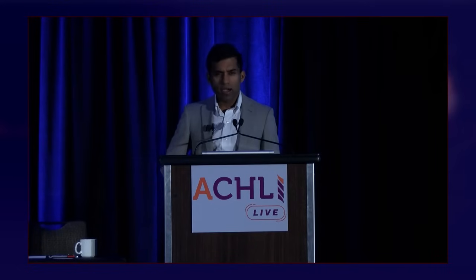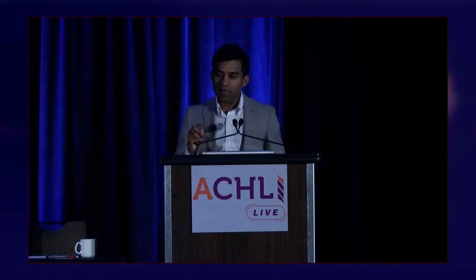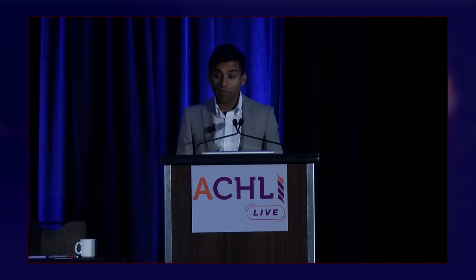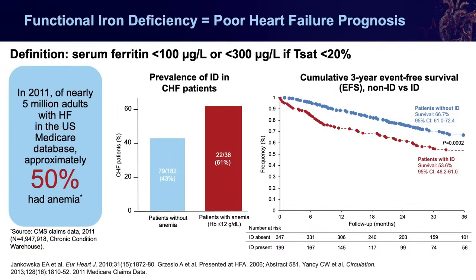Iron deficiency — especially functional iron deficiency in the context of heart failure — is common and adversely prognostic. In the US, approximately 6 to 7 million Americans have heart failure, with about 50% having concomitant anemia and about 50% having concurrent iron deficiency. Over a long-term trajectory of three years, patients with iron deficiency face worse event-free survival.